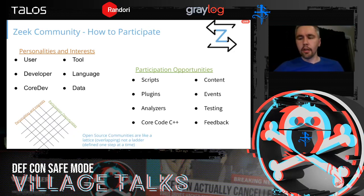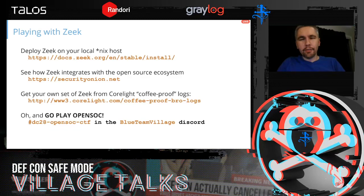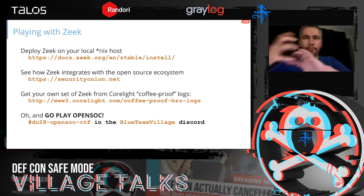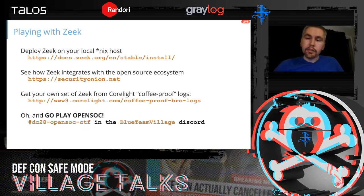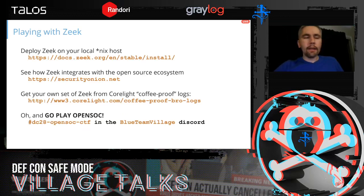There are a couple of links: the Zeek documentation for deploying Zeek locally — though I'd recommend waiting until after OpenSOC since you'll have a busy weekend. Security Onion is like the Kali for Blue Team — a Linux distribution with all these tools built in, including Zeek. It's great for getting your feet wet and understanding how it works with other tools. The Corelight PDF cheat sheet link is there too. And if you haven't joined the OpenSOC Discord yet, check out the DC28 OpenSOC CTF in the Blue Team Village Discord.